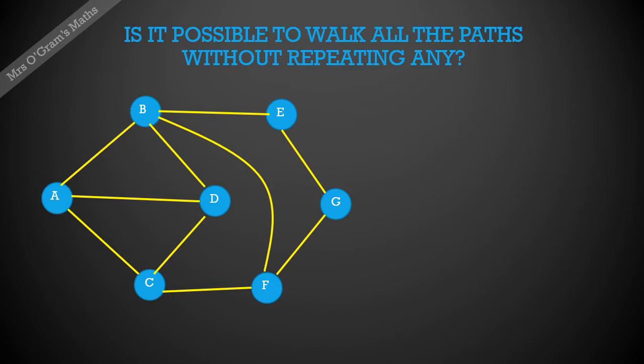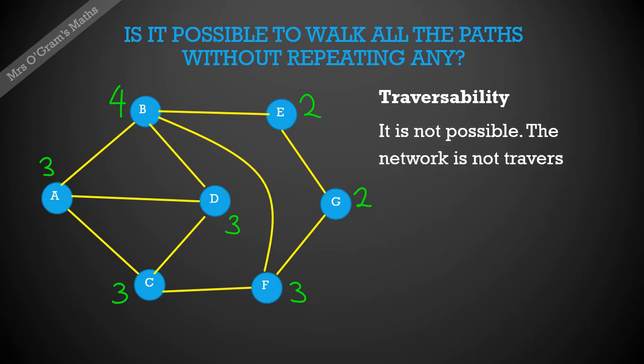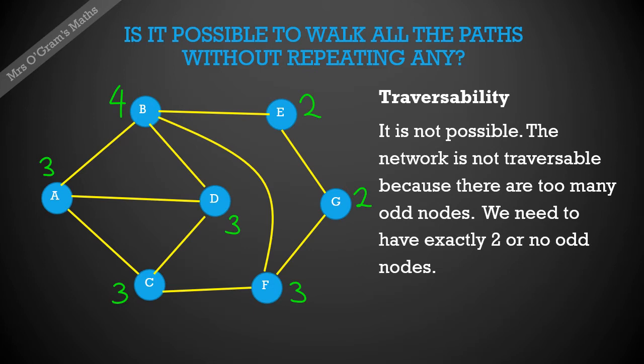Then we have our first question. Is it possible to walk all of the paths without repeating any? Say you want to set up a walking route through the park. Could you do that where you go along every single path without having to double back on yourself at any time? So this situation is asking us to have a think about traversability. To do that, we have to label our nodes with their order or degree. So we've got to count how many endpoints there are at each node. So B there, for example, is of degree four. And we'll go through and label each of those nodes with their degree. Now, we can see that this is not going to be possible because we've got too many odd nodes. We know that the rule for traversability is that this will work if we have no odd nodes or exactly two odd nodes. Here we've got four of them. So it's way too many.